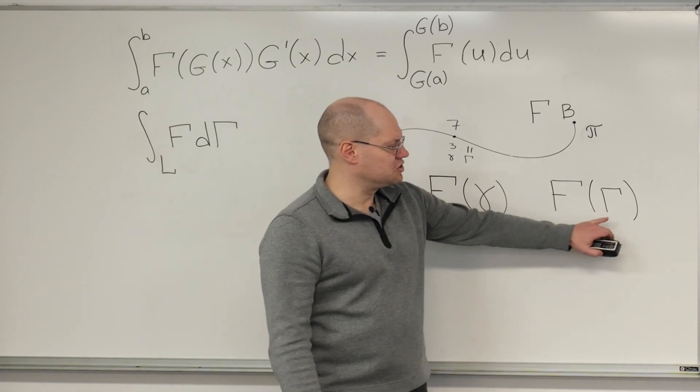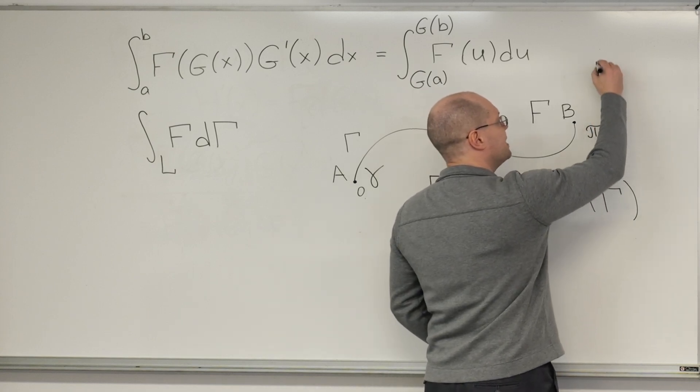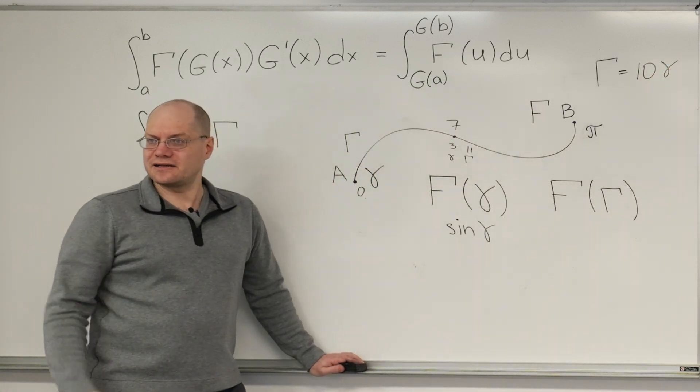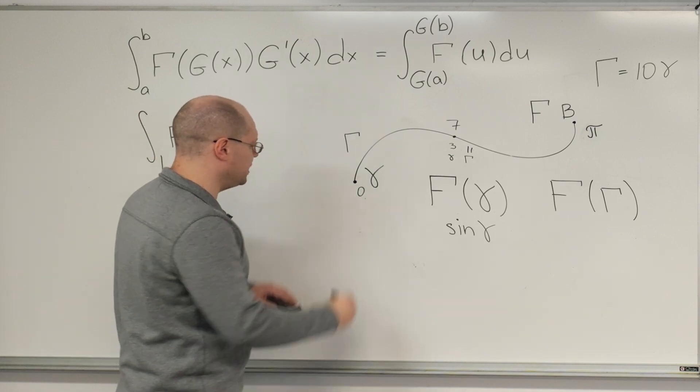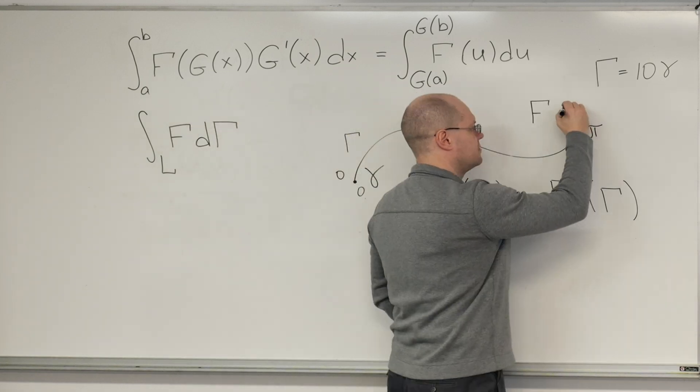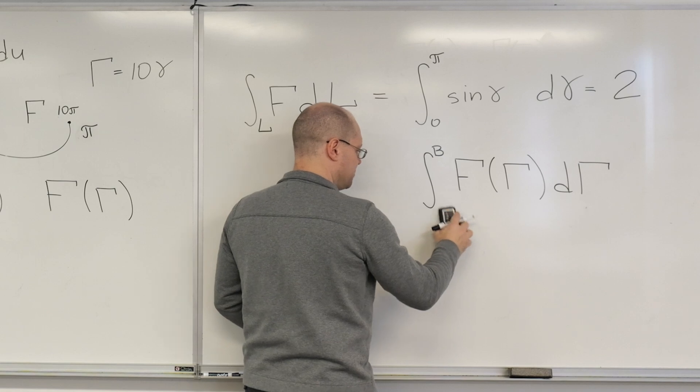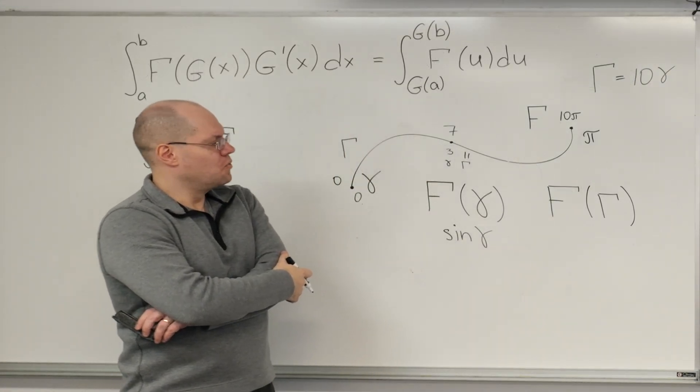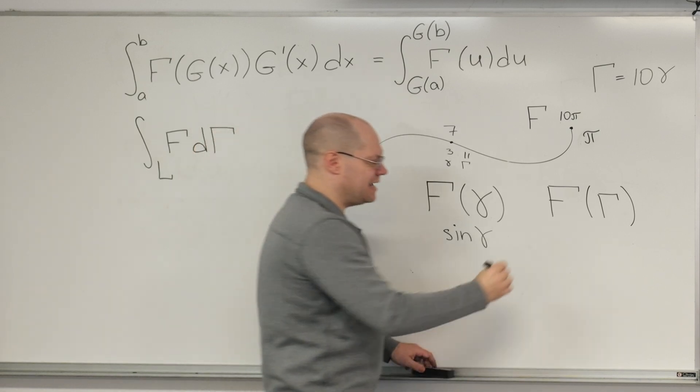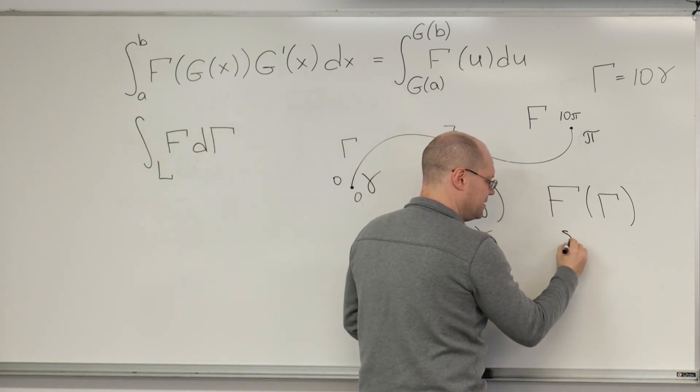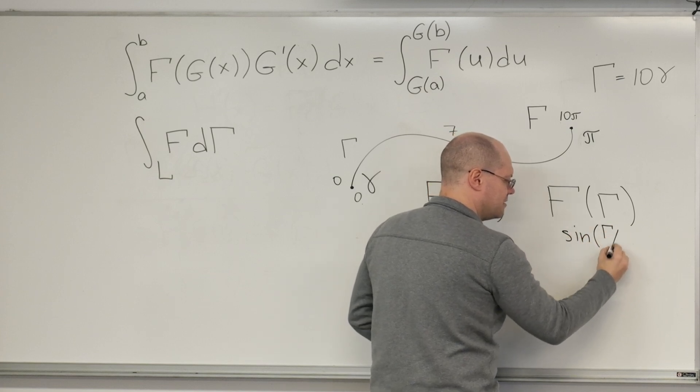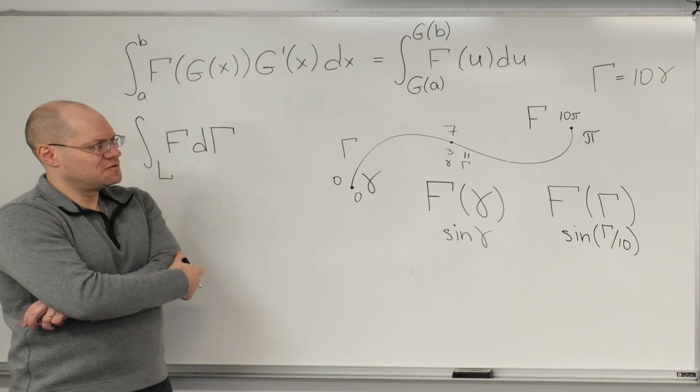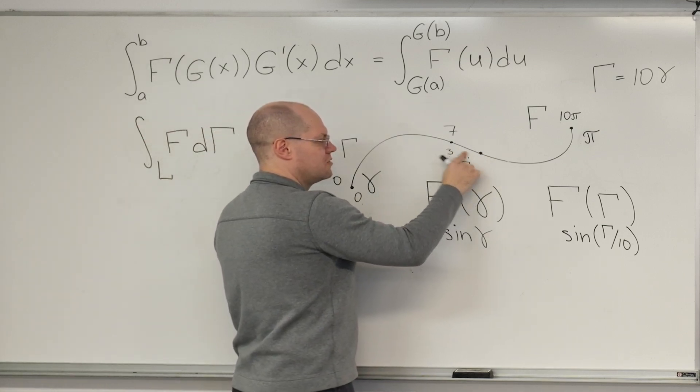Now, I'm considering an alternative parameter, gamma. And I want it related to little gamma by this identity. Fair? Can I consider this alternative parameter? Yes, I can. Again, it will change from 0 to 10 pi. It will change from 0 to 10 pi. So, if I use the exact same recipe for this parameter, what will F of capital Gamma look like? I think that it will be sine of capital Gamma over 10. Again, do you agree with me? Yeah. Because whatever value...